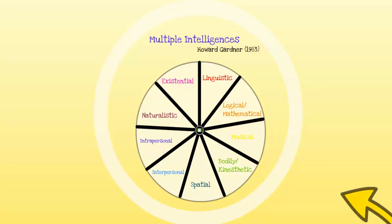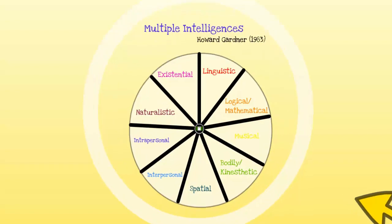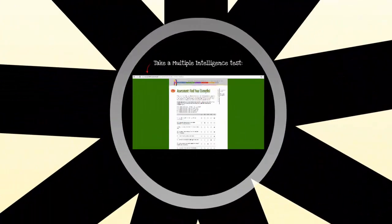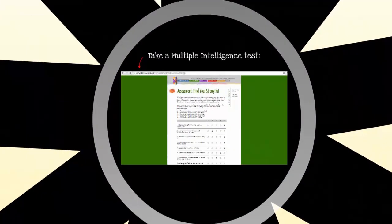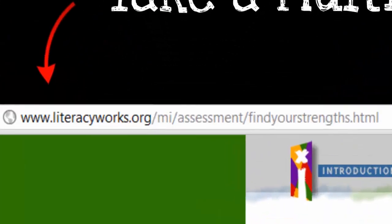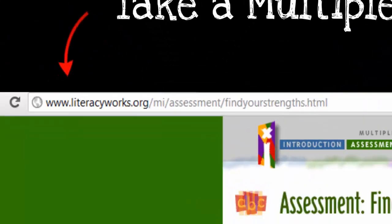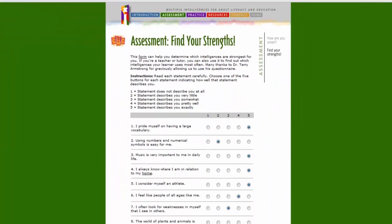Existential intelligence refers to a spiritual or religious intelligence as a possible additional type. Go to the link below and take the multiple intelligence test to see where your strengths lie — you may be strong in one or more of the areas.